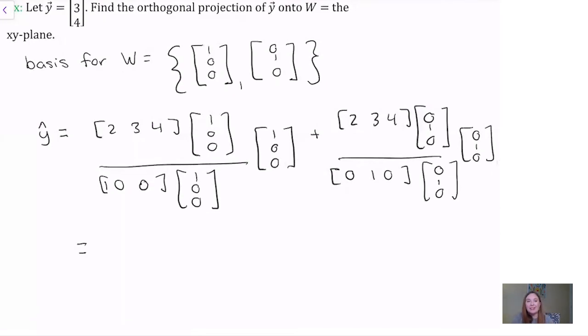The dot products we get here are equal to 2, 1, 3, and 1. So that our orthogonal projection y hat is the vector 2, 3, 0.